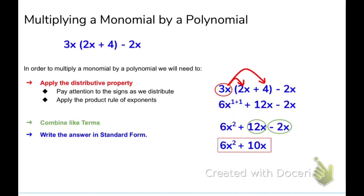So now we're going to talk about multiplying a monomial by a polynomial — one term by multiple terms. In order to multiply a monomial by a polynomial, we will need to use the distributive property. We're going to pay close attention to the signs that we distribute and apply the product rule of exponents. Remember: same variables, add the exponents. Then we combine like terms if any exist, and write the answer in standard form.